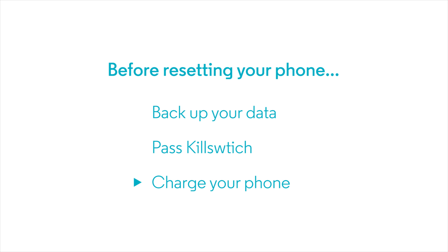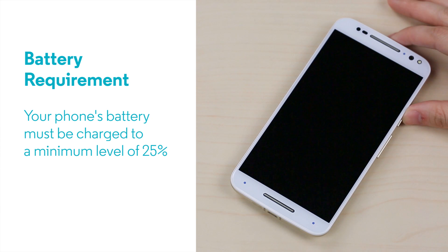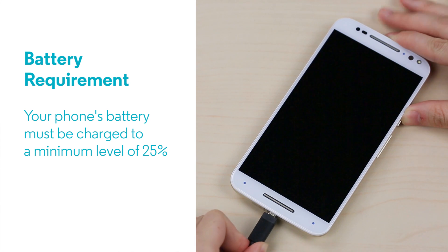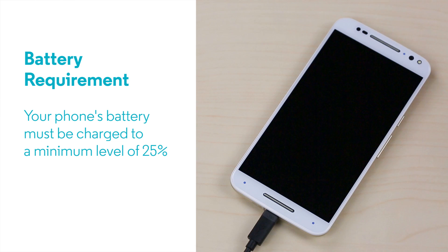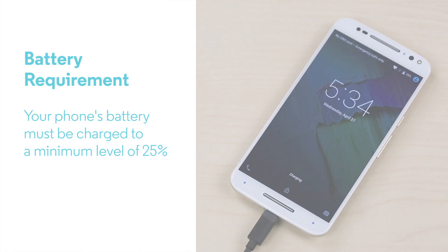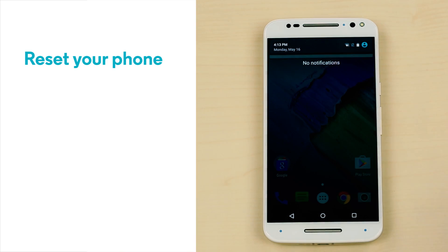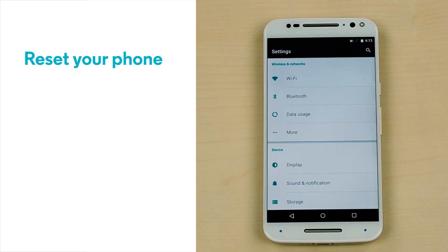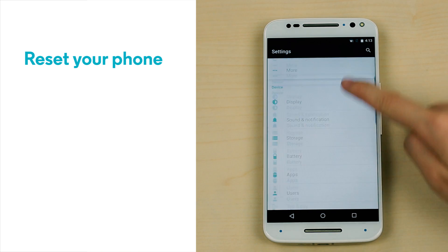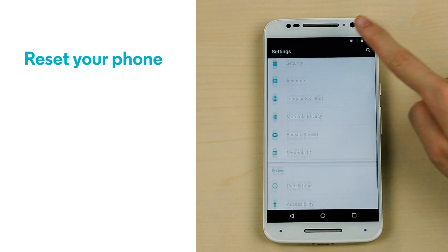Before you can attempt a factory data reset, your battery must be charged to a minimum level of 25%. To conduct an FDR, go to Settings and find Backup and Reset.